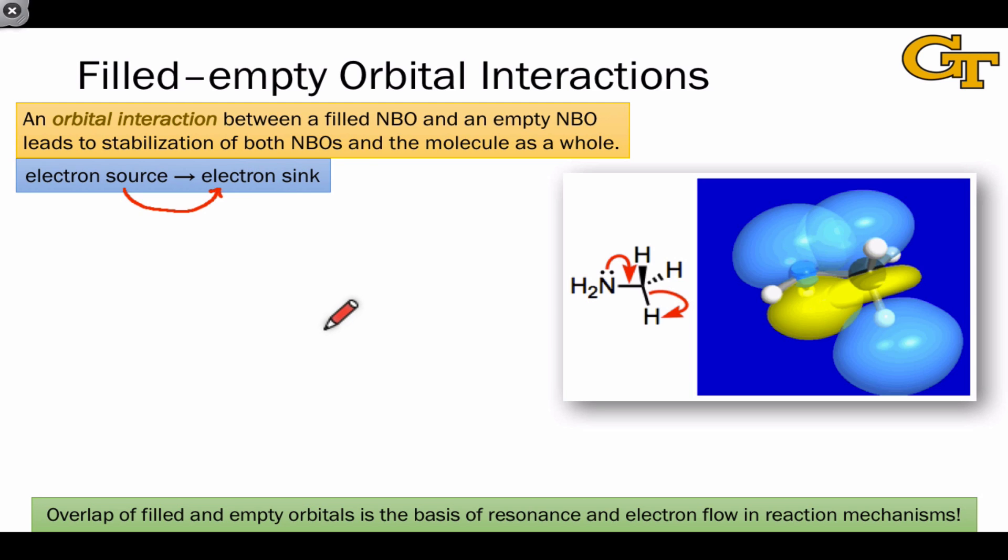We've seen many times that the electron sources and sinks in organic molecules are well described using natural bond orbitals. And the analogy of electron flow from source to sink in an orbital context is what's known as an orbital interaction. The essence of an orbital interaction is really overlap between a filled orbital and an empty orbital within a molecule or between molecules.